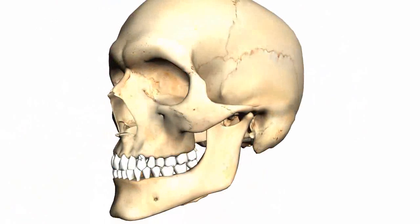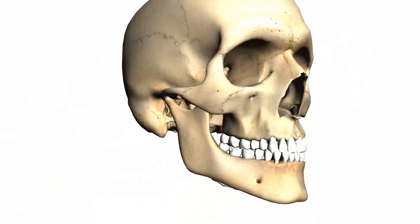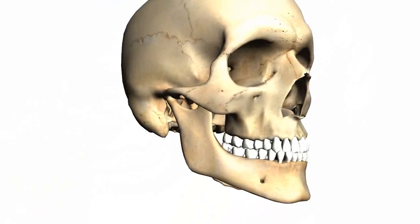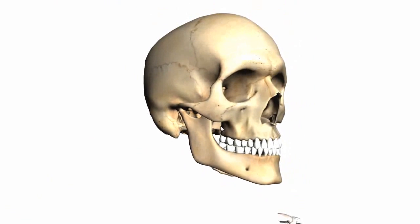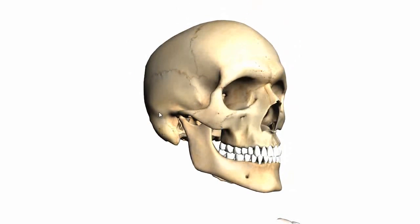The mandible is your lower jawbone, and together with the cranium it makes up the skull. The cranium has the upper part and the lower part, and the mandible isn't a part of the cranium — but together with the cranium, it makes up the skull.